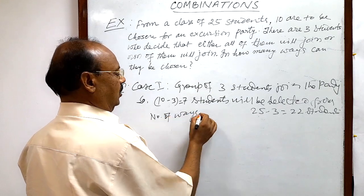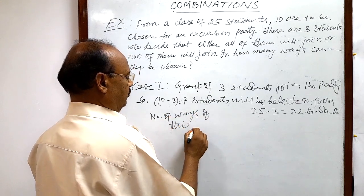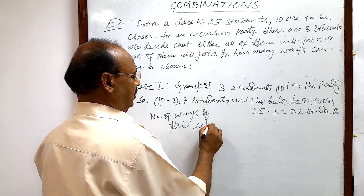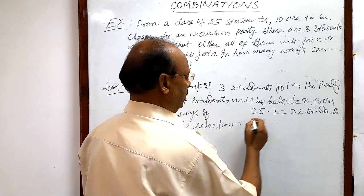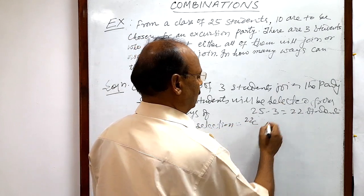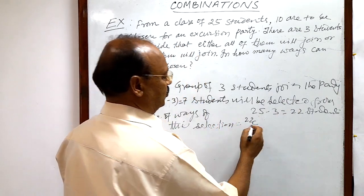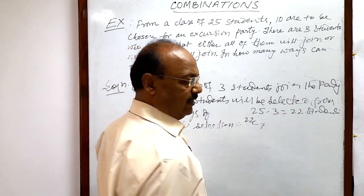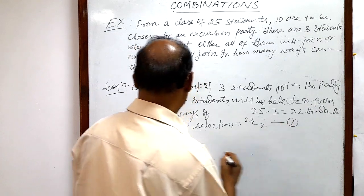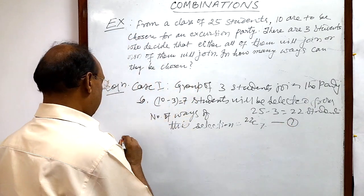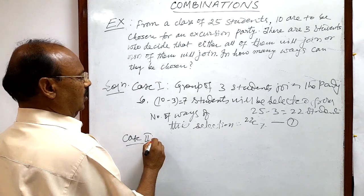The number of ways of this selection is 22C7. This is the result for case one.